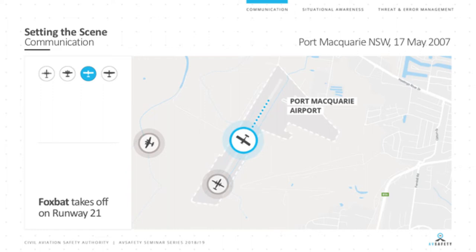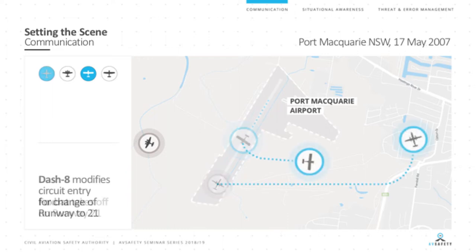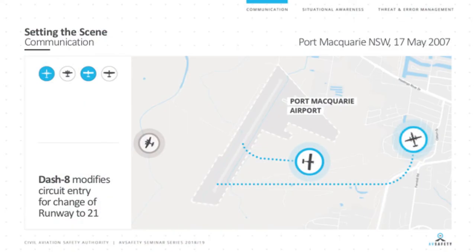Despite the Baron departing the area, the Dash 8 still had a Foxbat coming straight at them. The scenario developed further, and the Foxbat actually took off on runway 21, creating a potential air proximity event. The Dash 8 had to modify its circuit entry to maintain separation. Large turboprop aircraft like the Dash 8 typically make their first inbound call at about 30 miles, moving at 4 miles per minute — so they're in the circuit area within about 7 minutes. The workload is high and visibility outside is often poor, making last-minute circuit manoeuvring very undesirable.